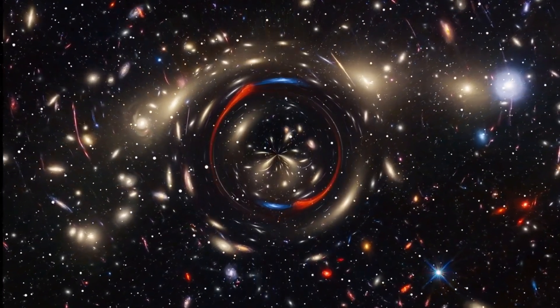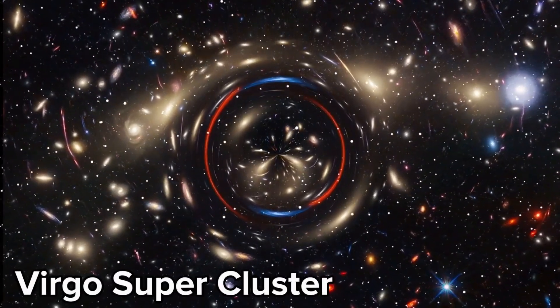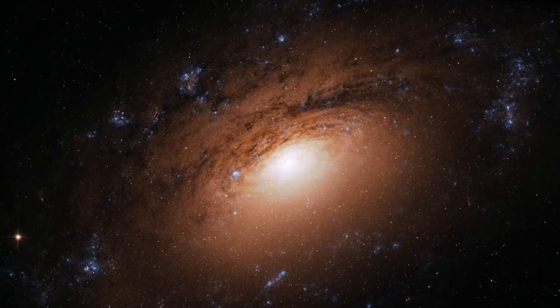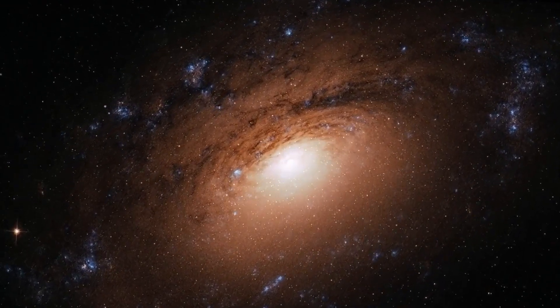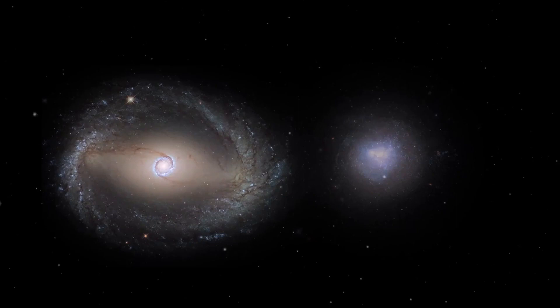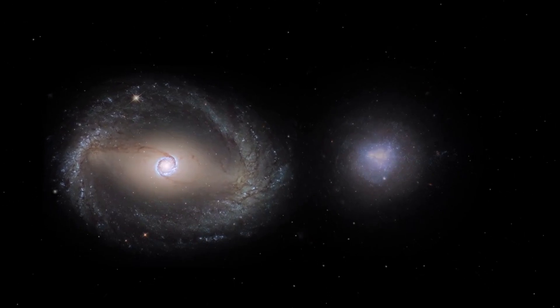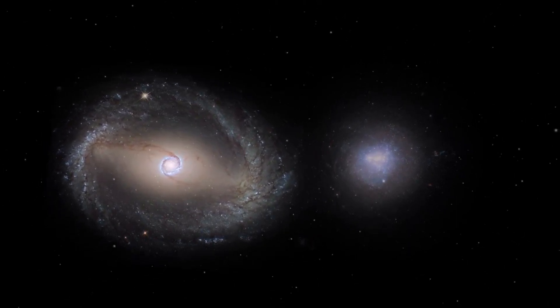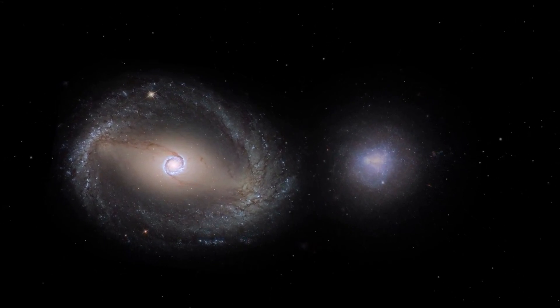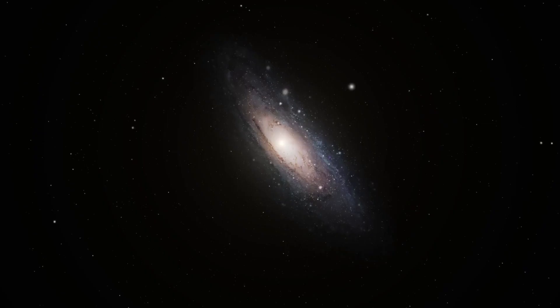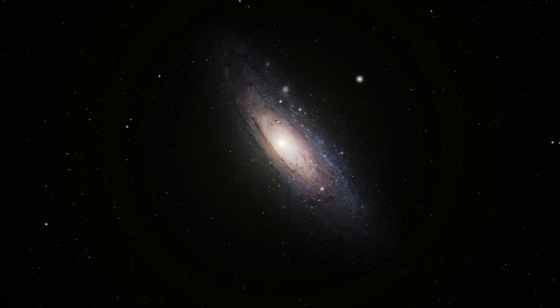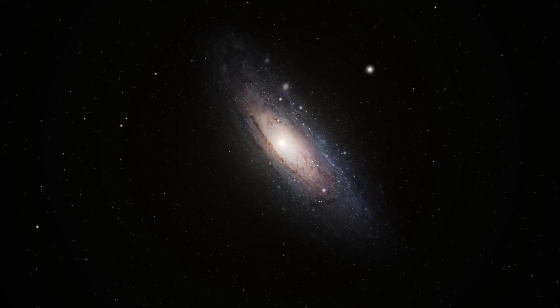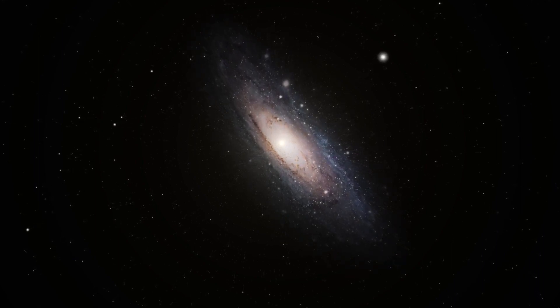We stumble upon something truly massive, the Virgo supercluster. It's like this gigantic gathering of galaxy gangs, including our own local group. This monster of space spans about 110 million light-years across, or 33 megaparsecs if you want to get technical. Think of it as this humongous party in the universe, with thousands of galaxies hanging out, each with their own stars and planets.